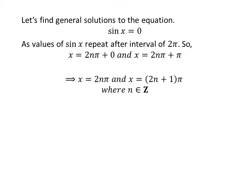Further simplification gives us the general solutions x = 2nπ and x = (2n + 1)π. As we know, 2n is an even integer and 2n + 1 is an odd integer for any n.